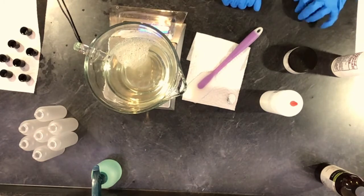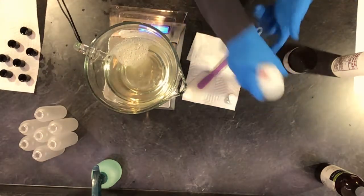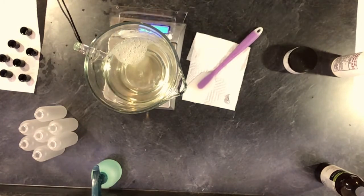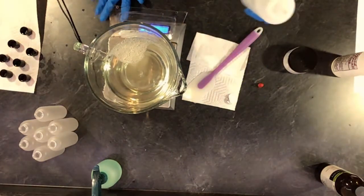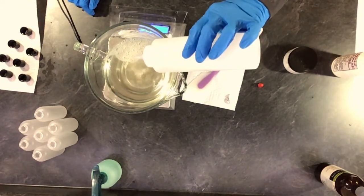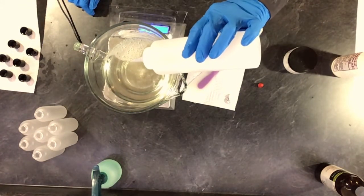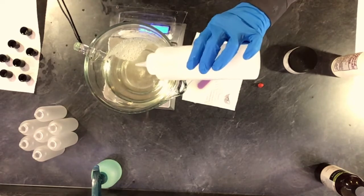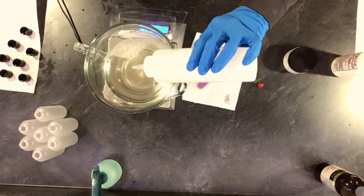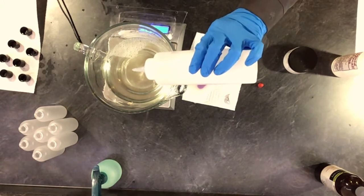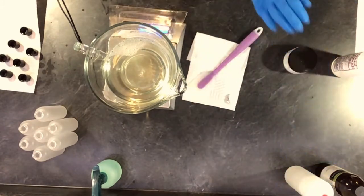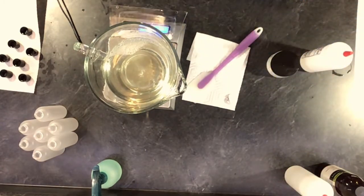Okay so now I'm going to do glycerin. So I have some vegetable glycerin here. Glycerin is a humectant so it draws moisture to your skin. So I really like it and then the last two ingredients I'm going to get a smaller scale.